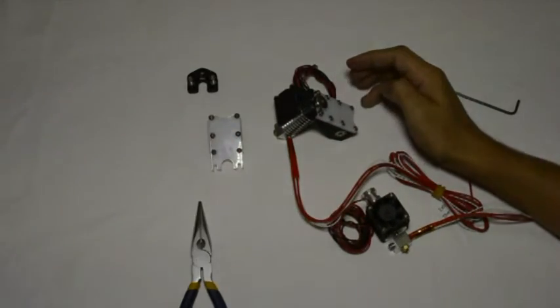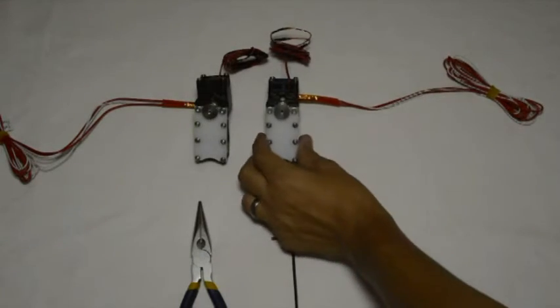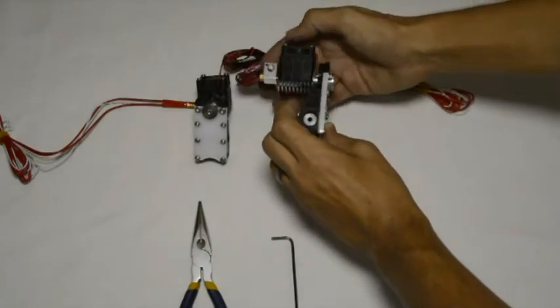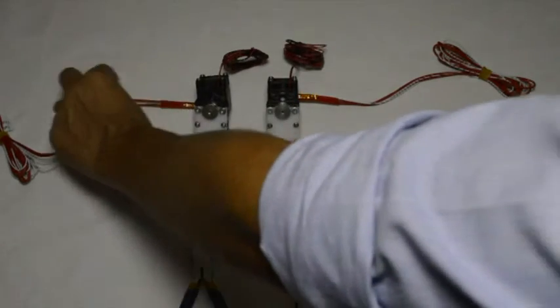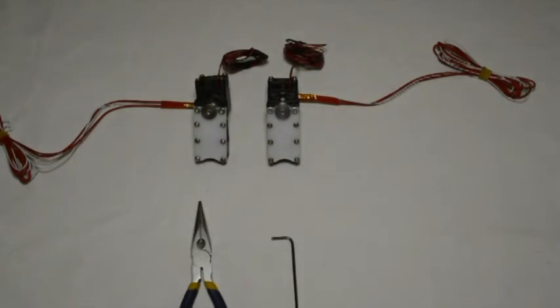And we can do the same for the other one. Okay when we are finished with that the two assemblies looks like this. And the hot ends are secured onto the rest of the assembly. And those wires go out to the left and these wires go out to the right.